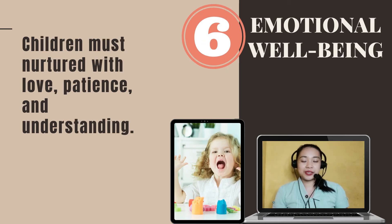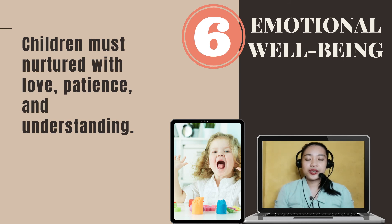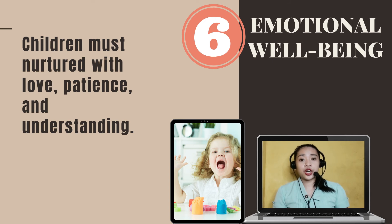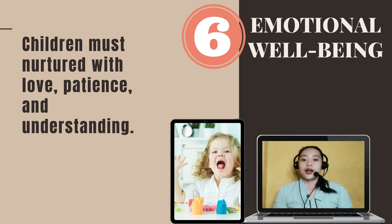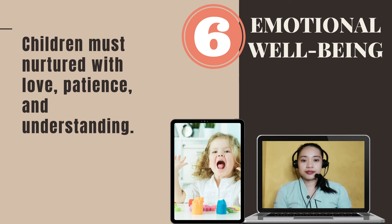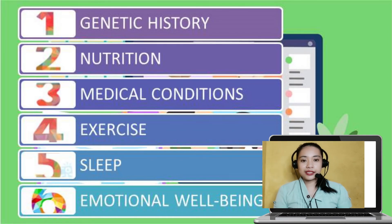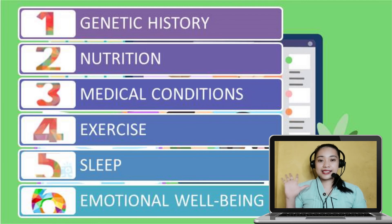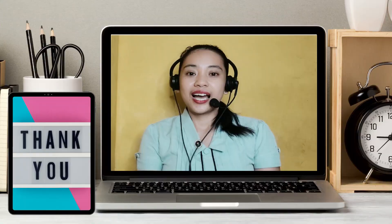The sixth factor is emotional well-being. Children must be nurtured with love, patience, and understanding. They need a supportive family environment. When children experience anxieties brought by emotional neglect or too much tension, growth is also stunted. The condition called psychosocial growth failure by doctors is extremely rare, but its consequences are as real as malnutrition. To recap, the factors affecting growth are: genetic history, nutrition, medical conditions, exercise, sleep, and emotional well-being.